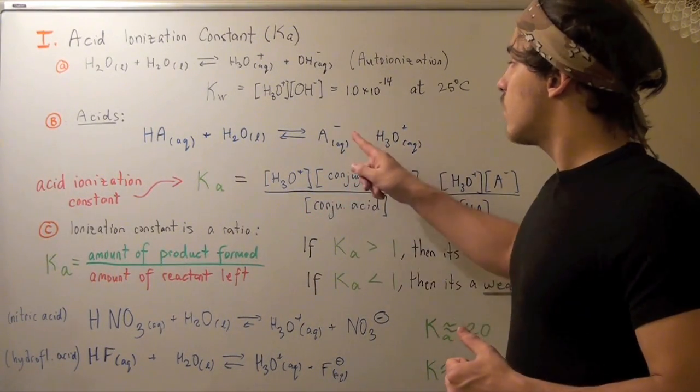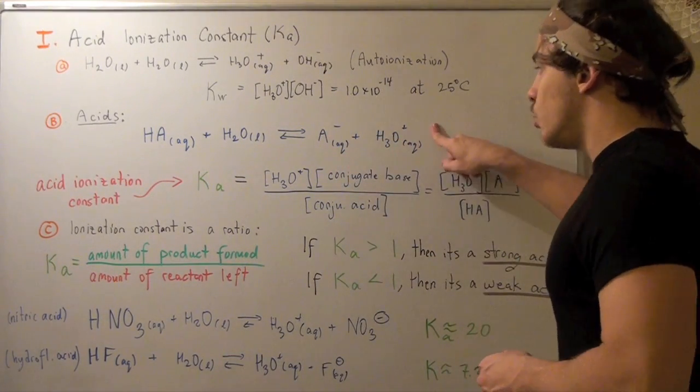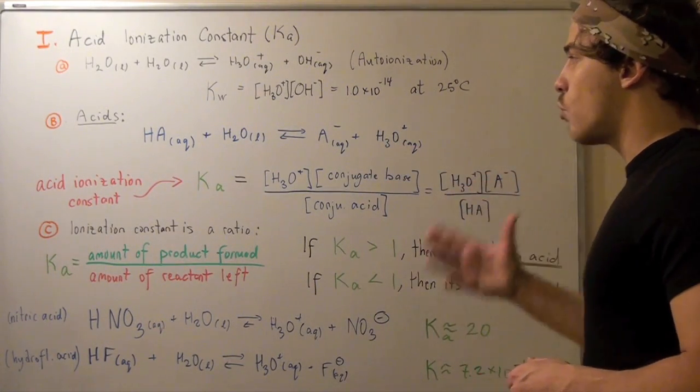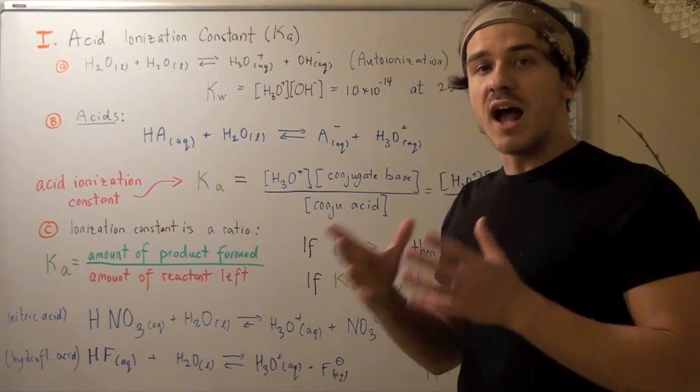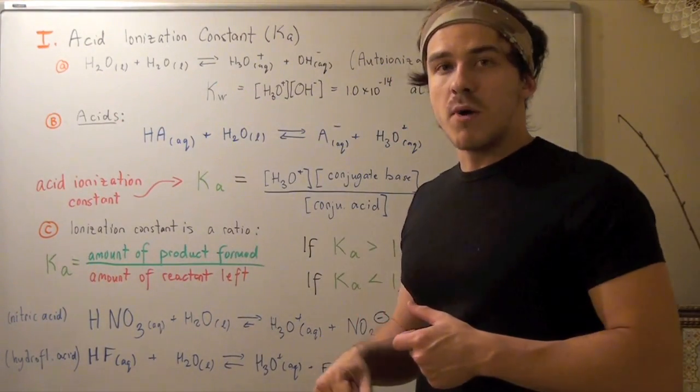In this case, our conjugate base is A⁻. Both species are included in our numerator because both are in aqueous form. Remember, liquids and solids are not included, which is why we didn't include the water molecules.